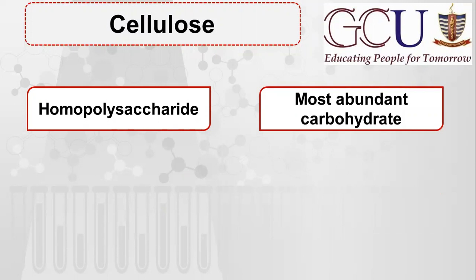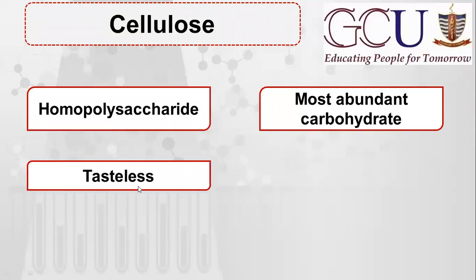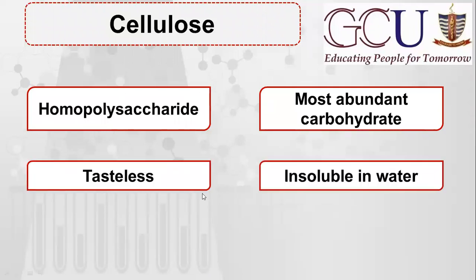Cellulose is the most abundant carbohydrate on earth. It is tasteless because, as a polysaccharide, it is insoluble in water.